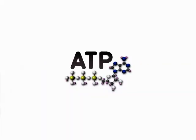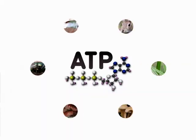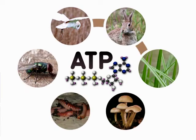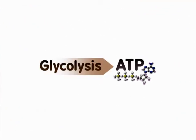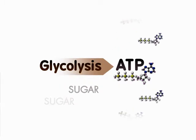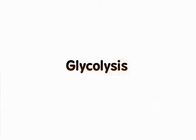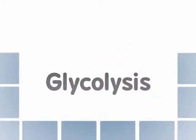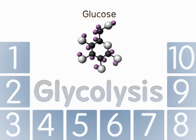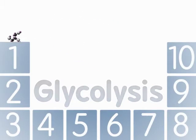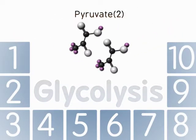ATP is the key energy molecule for all biological organisms. One source of ATP is glycolysis, a series of reactions that break down sugars while producing ATP. Glycolysis is a series of ten reactions that converts sugars, like glucose, into three-carbon molecules called pyruvate.